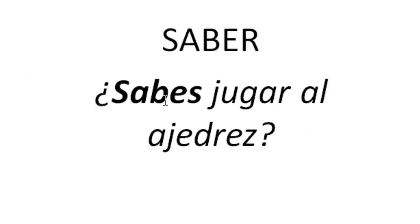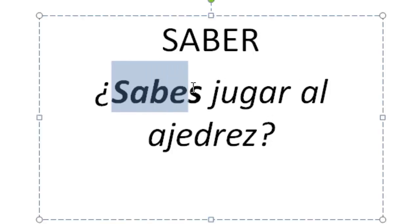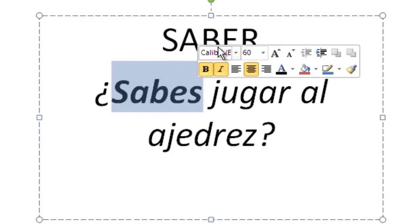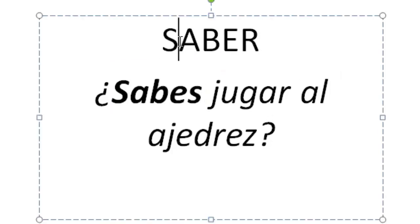Let's do another one with saber. ¿Sabes jugar al ajedrez? — Do you know how to play chess? Even though this isn't strictly knowledge, it is a 'how to do something,' so we use saber also when we're talking about how to. Those are some examples of saber.